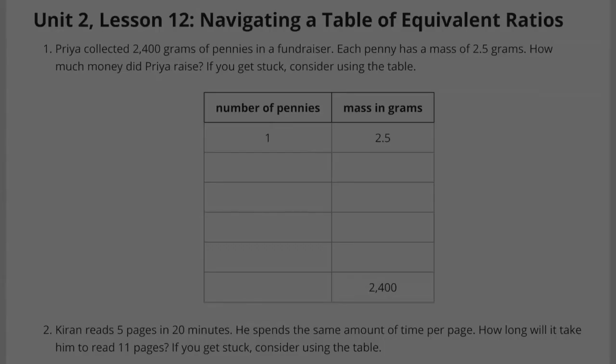Priya collected 2,400 grams of pennies in a fundraiser. Each penny has a mass of 2.5 grams. How much money did Priya raise? If you get stuck, consider using the table.